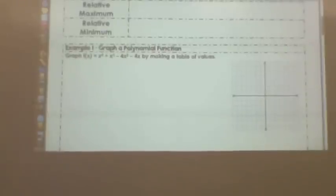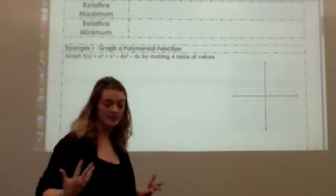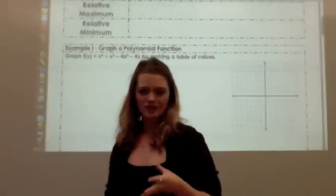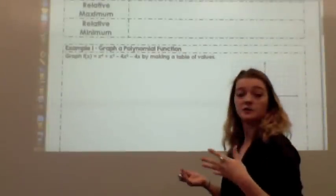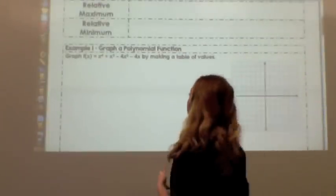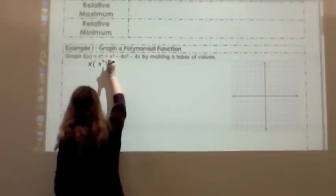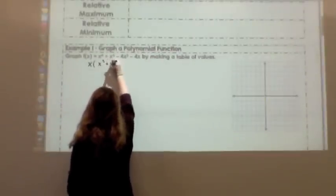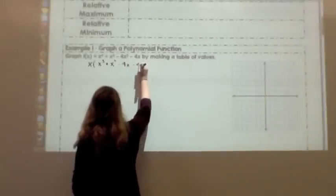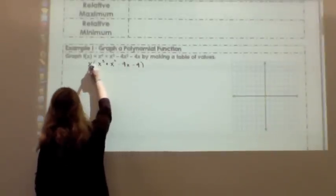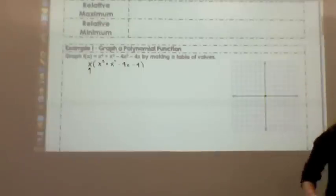Alright, so I have this function x to the 4th plus x to the 3rd minus 4x squared minus 4x, and I'm going to make a table of values. But actually, I'm first going to try to factor it to make it a little bit easier because one of the things that I know is factors are going to find my x-intercepts.